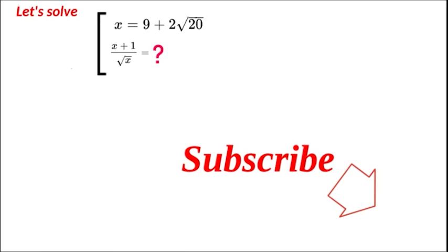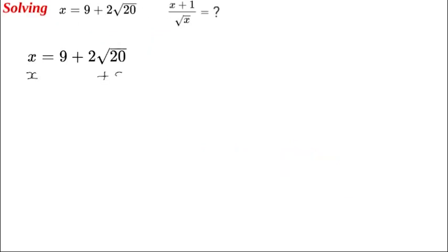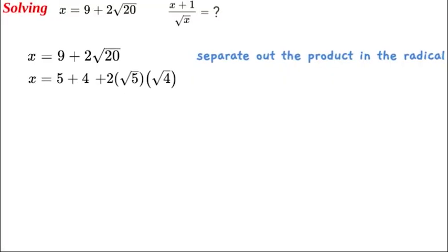Let's get started. We write the square root of 20 as 2 times the square root of 5, by the square root of 4. We also look at the 9 and write it as a separation of 5 on one side and 4 on the other side.